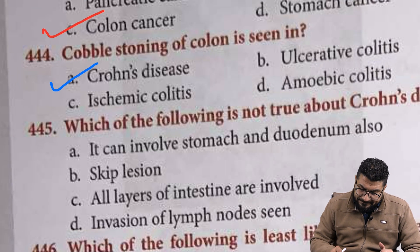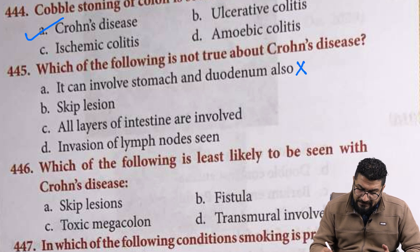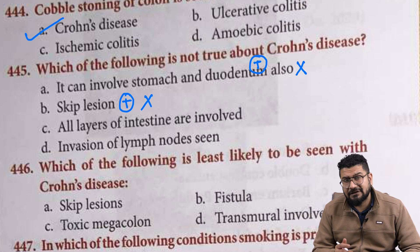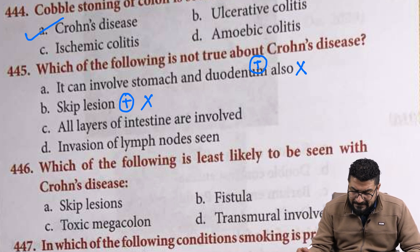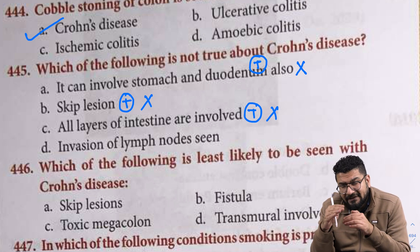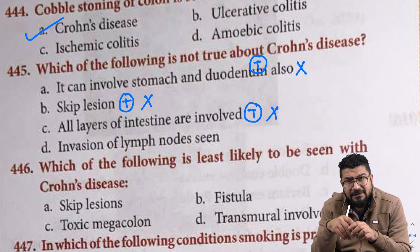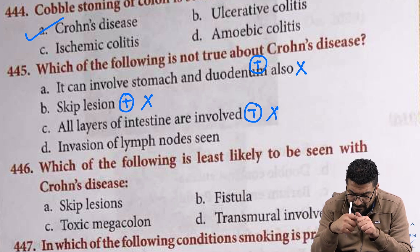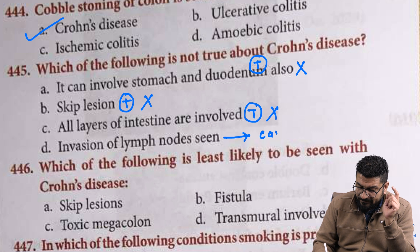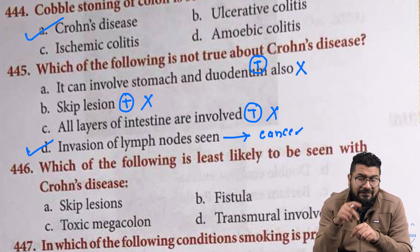Cobblestone — easy one — Crohn disease. Following is not true about Crohn disease: it can involve the stomach and duodenum — Crohn disease can involve any part from mouth to anus, so that is a true statement. Crohn disease can have skip lesions — true. Ulcerative colitis has continuous lesions. All layers of the intestine are involved — yes, Crohn disease is transmural, so that is also true. Ulcerative colitis involves mucosa and submucosa only. Invasion of lymph nodes is seen only when Crohn disease has converted into cancer — otherwise, it is not seen. So Crohn disease is pre-malignant; lymph node invasion is seen only when converted to cancer.